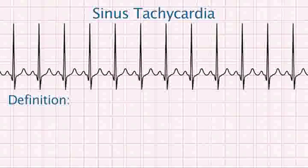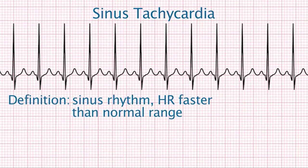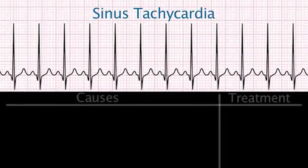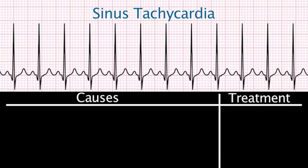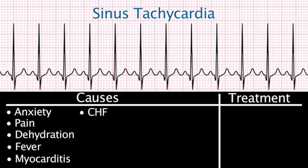Sinus tachycardia is a sinus rhythm where the heart rate is faster than the normal range for that age group. Causes can include anxiety, pain, dehydration, fever, myocarditis, congestive heart failure, and hypovolemia.